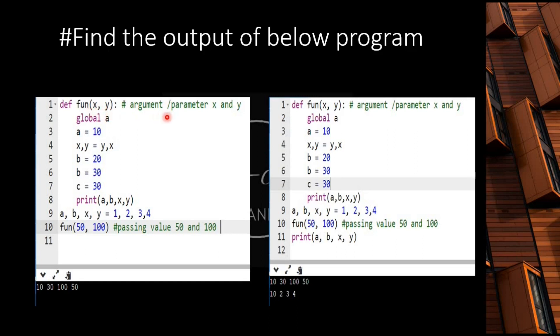Argument and parameter x and y. Then we declare a global variable that is a, and then we declare a value of a as 10. Then we are using the formal parameters. Remember, these are formal parameters, x comma y equals to y comma x. So here we have x or value interchange to be equal to 20. This is a different variable here, no global.